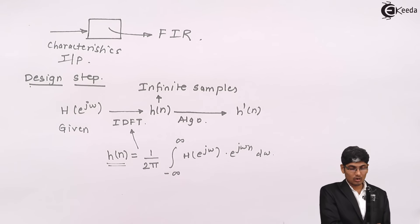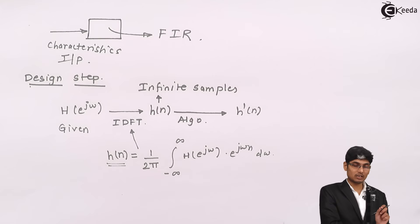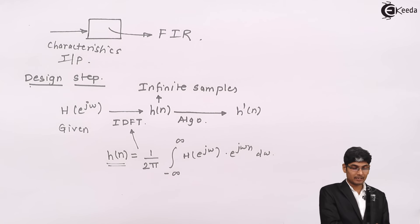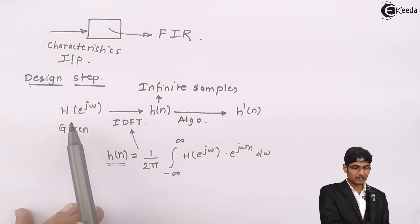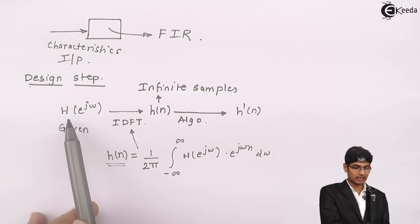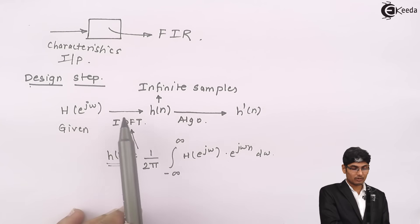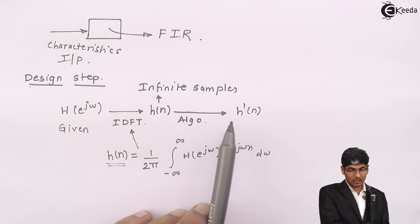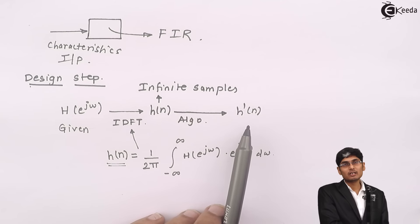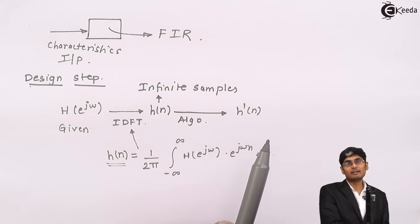This is the overall view of an FIR filter. An FIR filter demands that the filter will have a finite number of samples in its response, and I will be designing the system rather than just understanding what the system is. I will be getting some characteristics from the user — normally we get H(e^jω) — which is converted to H(n), and then applying some algorithms to get H'(n). Thank you.